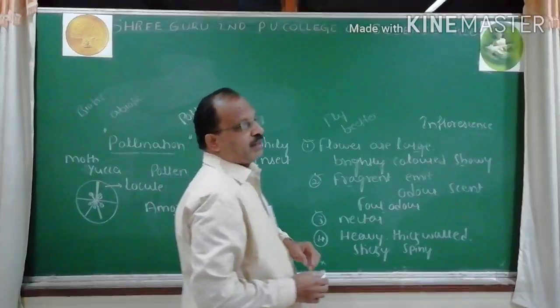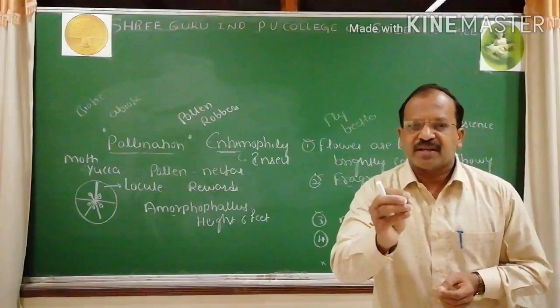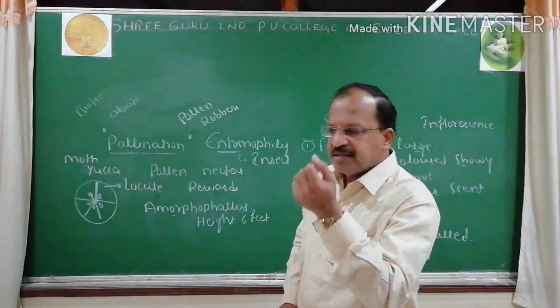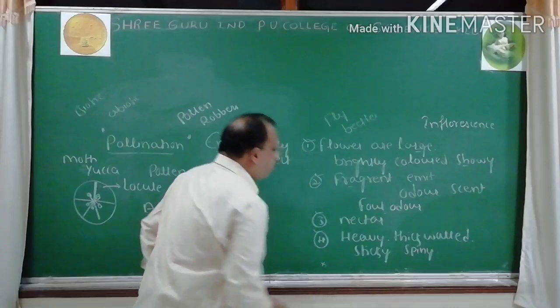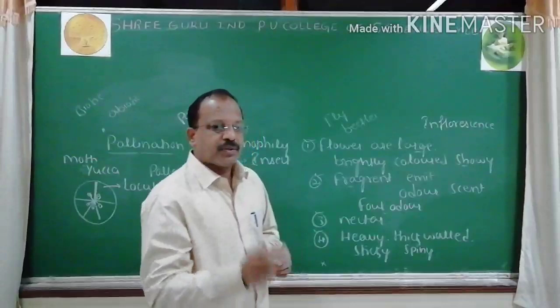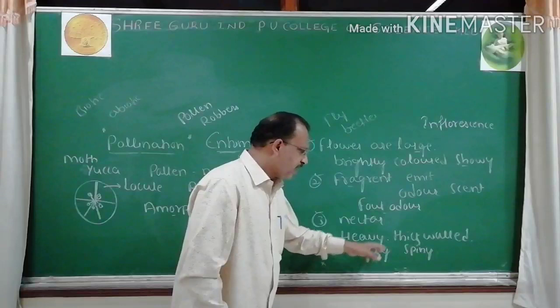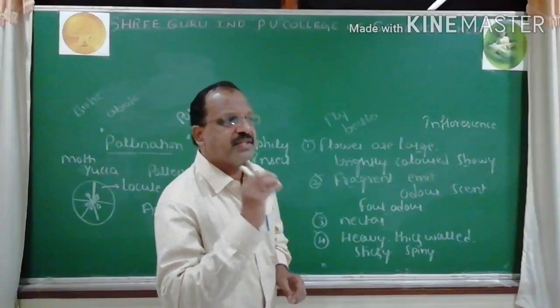Third character: entomophilous flowers produce nectar, specially produced by nectariferous glands. Nectar is a sugary fluid that attracts insects. Pollen grains are heavy, thick, sticky and spiny — heavy and thick-walled so they are not easily damaged by visiting insects; sticky and spiny so they can easily get attached to the body of insects.